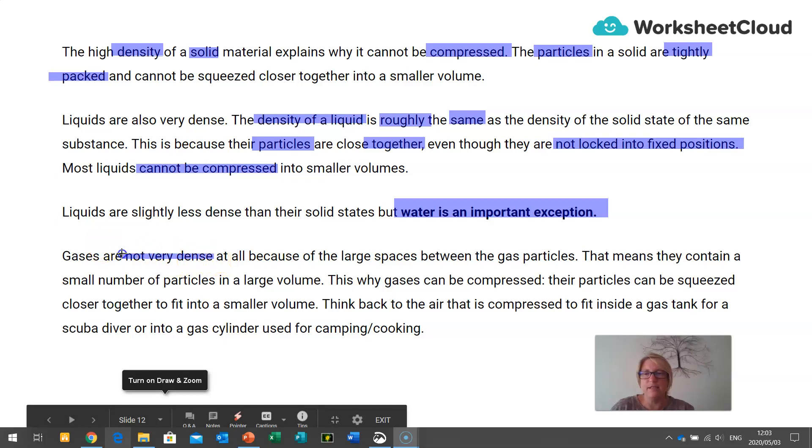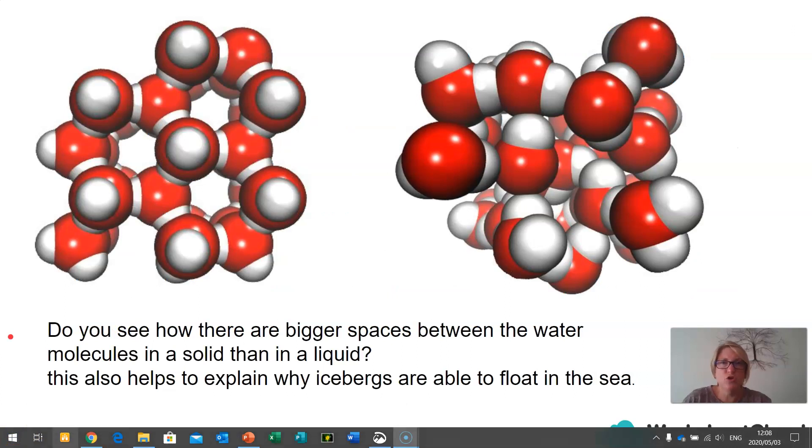Gases are not very dense at all because they have large spaces between the gas particles. This means they contain a small number of particles in a large volume. And this is why gases can be compressed. Their particles can be squeezed together to fit into a smaller volume. Think back to when we had a look at the particle model of matter and the fact that we were able to compress air into a gas tank or into the cylinders that scuba divers use or the gas cylinders that we use for cooking and camping.